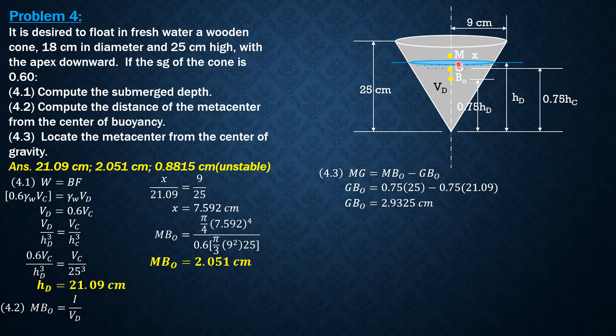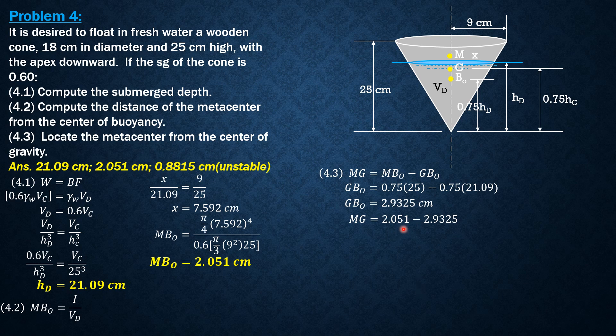So that means M should be below G, or the metacentric height should be negative. But anyway, let's still use this figure. So MG is MBO minus GBO, 2.051 minus GBO. MG is negative, so that means it is unstable. It cannot float with apex downward in this position. It can only float when the diameter of the cone is increased, perhaps to 40 cm, so that there's a big possibility that it can float upright.